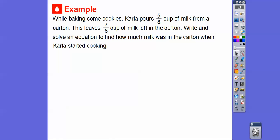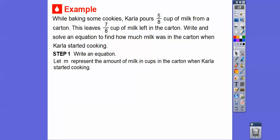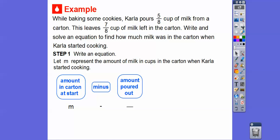While baking some cookies, Carla pours 5/8 of a cup of milk from a carton. This leaves 7/8 cup of milk in the carton. We're going to write and solve an equation to find how much milk was in the carton when Carla started cooking. Let m represent the amount of milk in the carton when Carla started. The amount in the carton at the start is m, and we subtract what Carla poured, which is 5/8. That equals the amount left, which is 7/8. So our equation is m - 5/8 = 7/8.